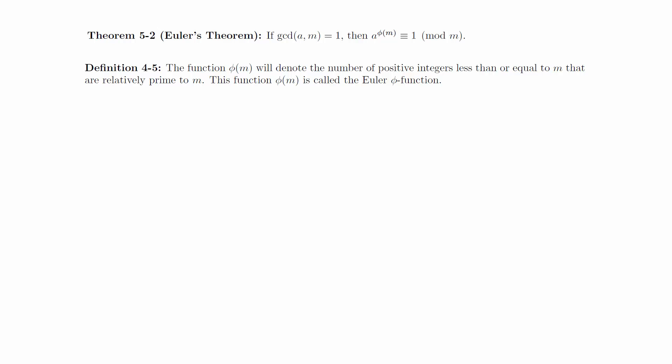Recall that phi of m is called the Euler phi function, and is defined as the number of positive integers less than or equal to m that are relatively prime to m.